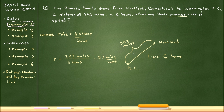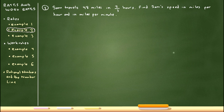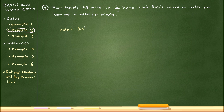That was a fairly simple example — it didn't necessarily need a picture. However, when we get into more complex examples, it may be helpful to draw pictures, so it's good to get in the habit early. Example two: Sam travels 48 miles in two-thirds of an hour. Find Sam's speed in miles per hour and in miles per minute. We're going to apply the formula: rate = distance over time.